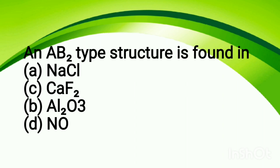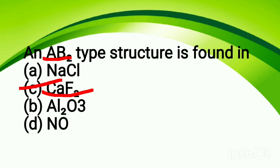An AB₂ type structure is found in: option A, NaCl; option B, CaF₂; option C, Al₂O₃; option D, none. The correct answer is CaF₂. You can verify this by checking the stoichiometry — Ca and F₂ gives an AB₂ type arrangement.